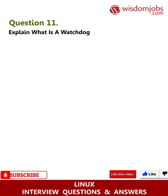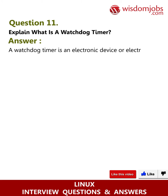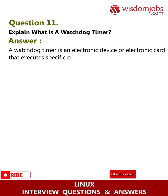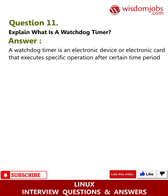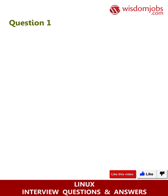Question 11: Explain what is a watchdog timer. Answer: A watchdog timer is an electronic device or electronic card that executes a specific operation after a certain time period if something goes wrong with an electronic system.